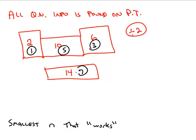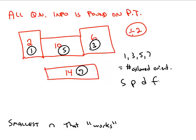One, three, five, and seven are directly related to the quantum numbers, because one, three, five, and seven are the number of allowed orientations for S, P, D, and F orbitals.